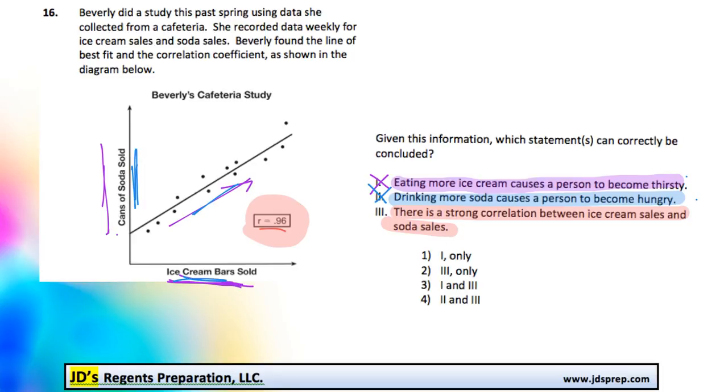And so, the correct answer is indeed three only, option number two. That's all for this video. Thanks for visiting JD's Regents Preparation.